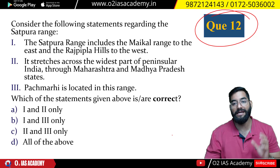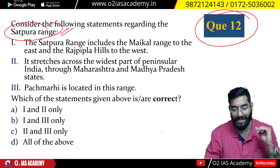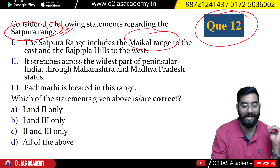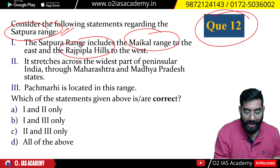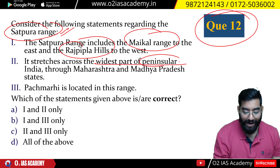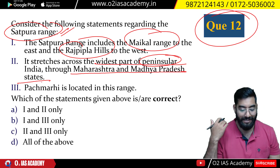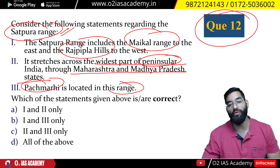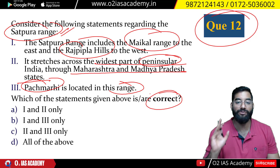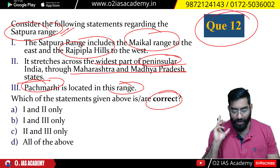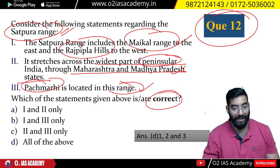Question number 12: Consider the following statements regarding Satpura ranges. The Satpura ranges pass through the widest part of peninsular India through Maharashtra and Madhya Pradesh. Panchmari is located on this range. All three statements are correct — the answer is all of the above.